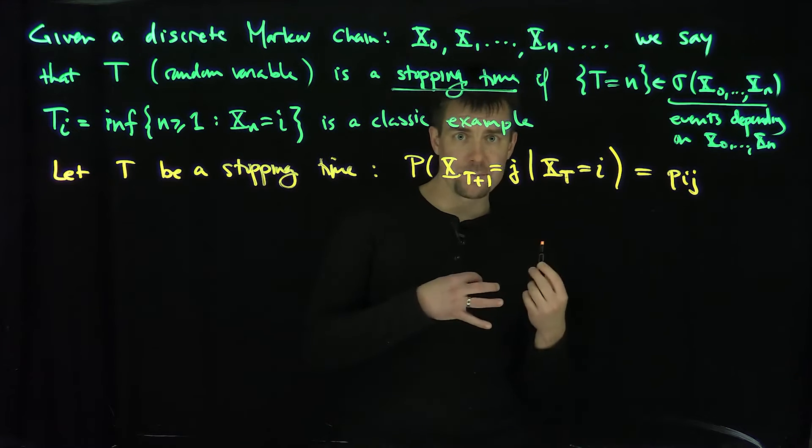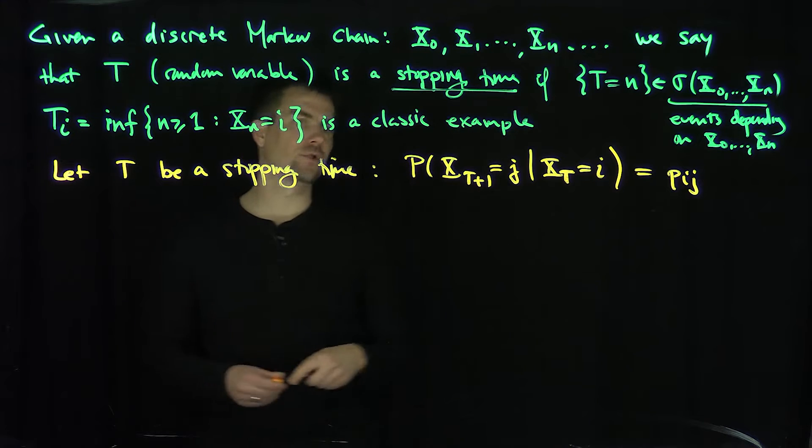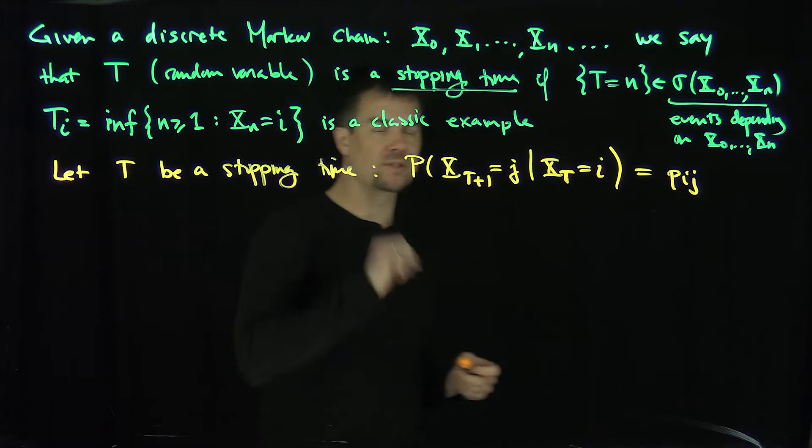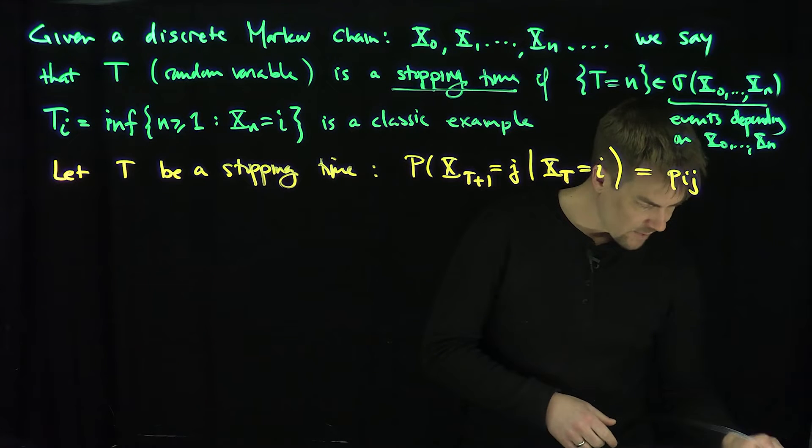In other words, this time actually acts the same as the temporal time we're dealing with. That's a strong Markov property because these are random variables now, so these are random times in the process. All right, so how do we prove something like this?